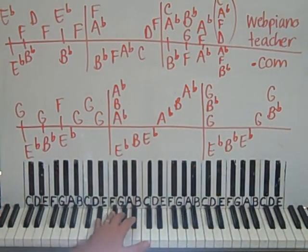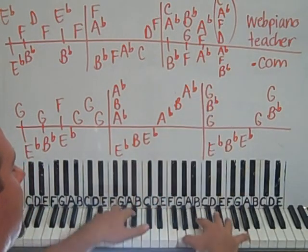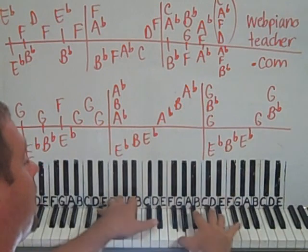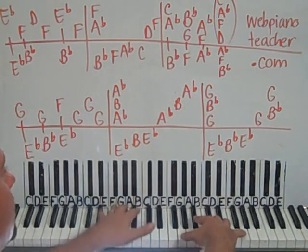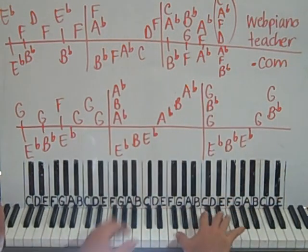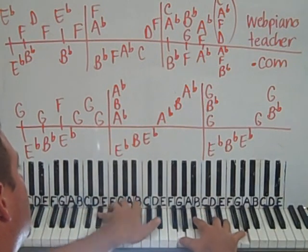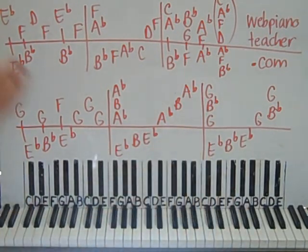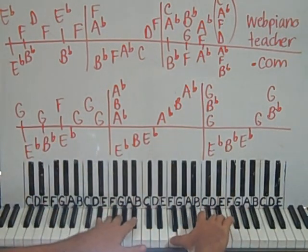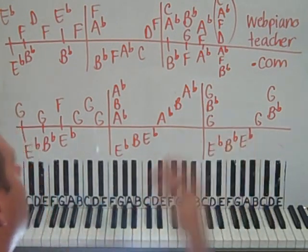So left hand's on an E flat still. And then B flat. And then up to E flat. So you have together. Left, left, right, right. Together. Left, left, right, right here.